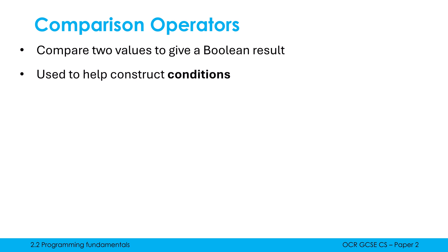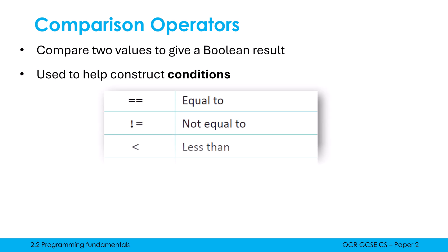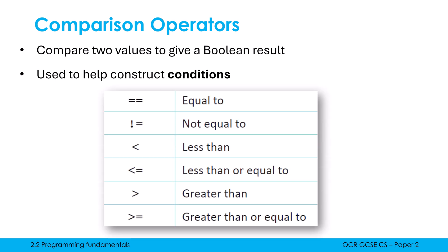We use comparison operators to help construct conditions. We have conditions in if statements, but also in while loops and do-until loops. Here are the comparison operators — I'm sure you recognise some of these. The top two we can use to check for either equality or not-equality for really any data type. The bottom four are generally for numbers, although you may occasionally use them to compare two letters to see where they sit in the alphabet.